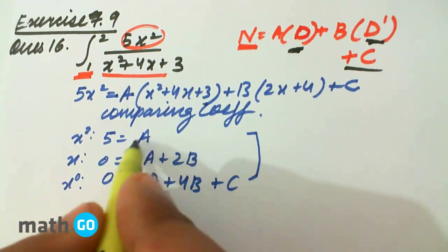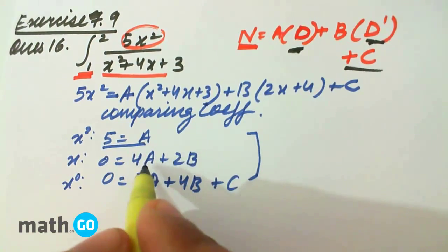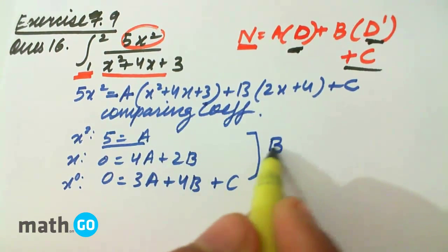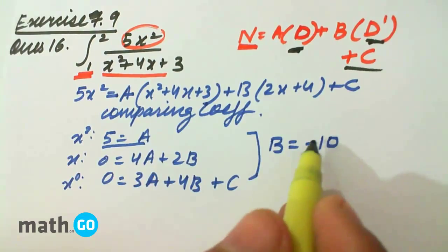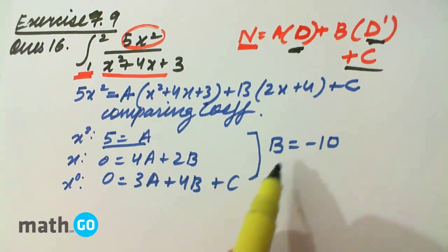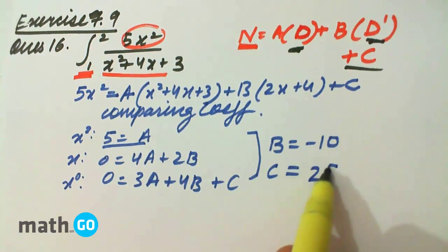So simply solving this, we have A equals 5. And if we substitute this, we get B equals minus 10 and C equals 25.